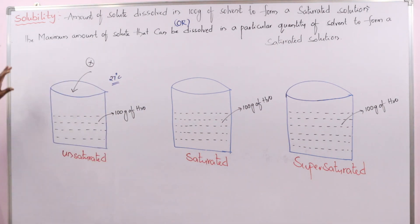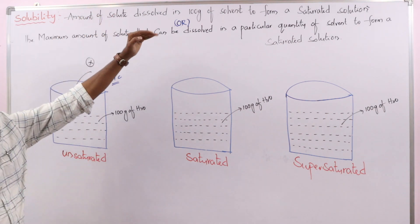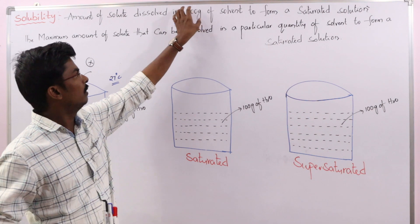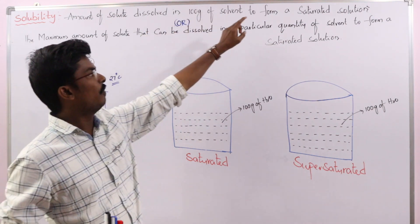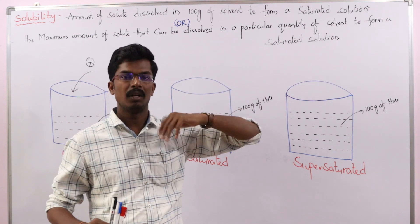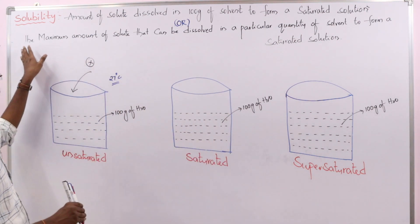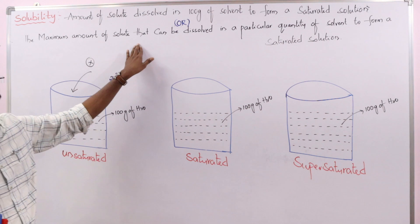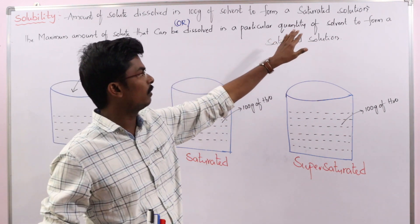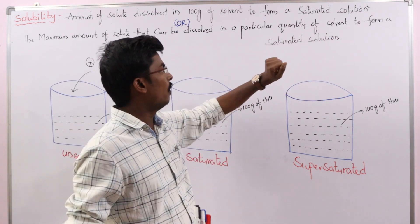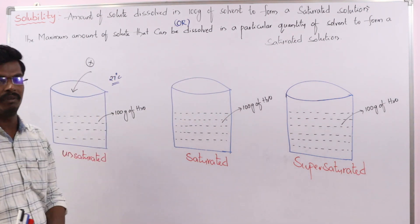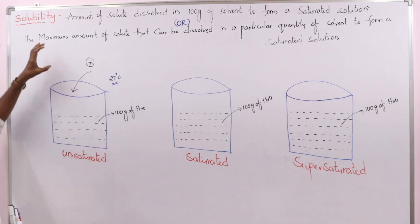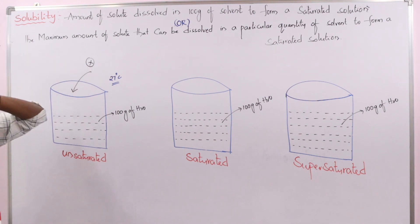First, let us look at what is meant by solubility. The amount of solute dissolved in a particular solvent — 100 grams of solvent is generally taken as reference — to form a saturated solution. Or we can define it as the maximum amount of solute that can be dissolved in a particular quantity of solvent to form a saturated solution at a particular temperature. This is a simple definition of solubility.